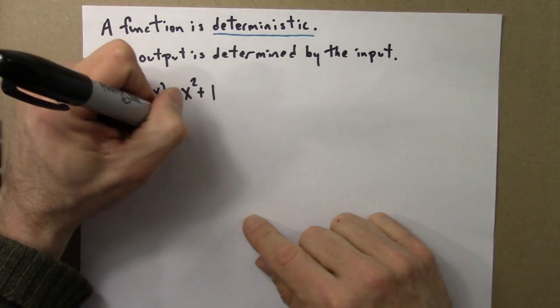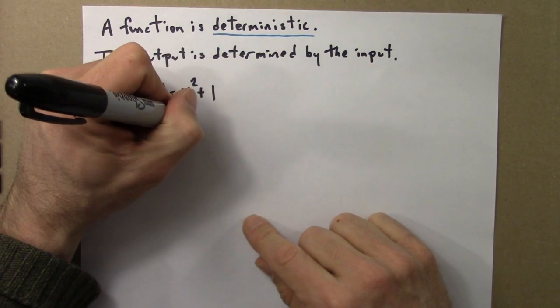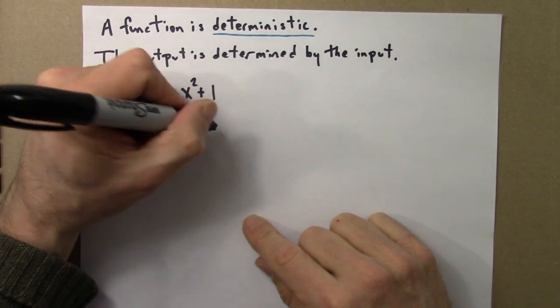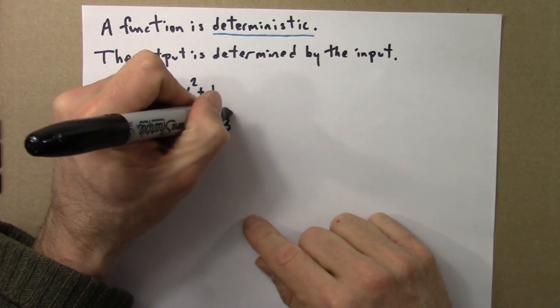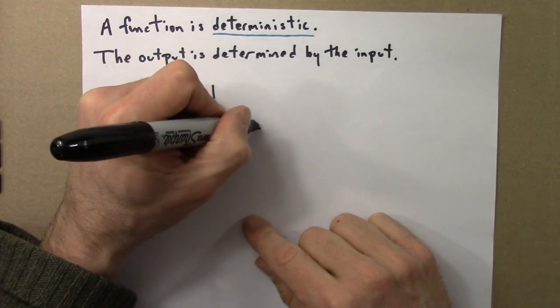We saw last time that g of three is three squared plus one equals ten.